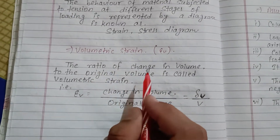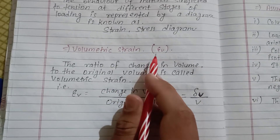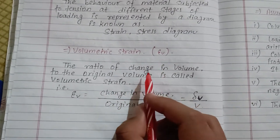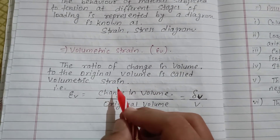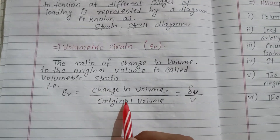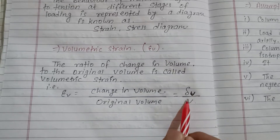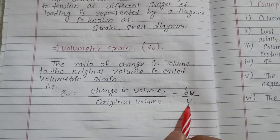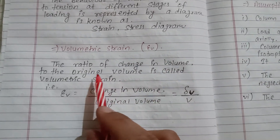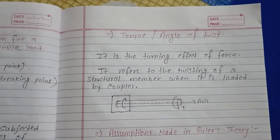Volumetric strain: the ratio of change in volume to the original volume is called volumetric strain. Mathematically, volumetric strain equals delta-V upon V — change in volume divided by original volume.